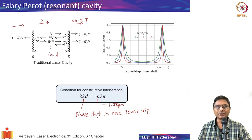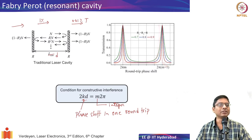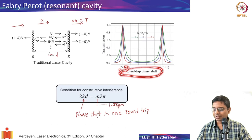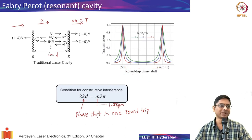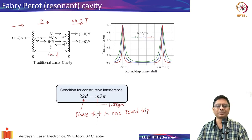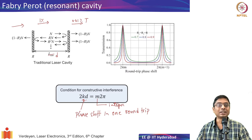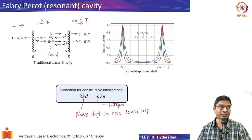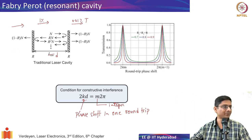When you have such a scenario, the transmission through this cavity system goes to one. Sharp transmission peaks occur at integer multiples of 2π round-trip phase shift. The distance between the mirrors is an integral multiple of wavelengths. Even though you'd expect only 0.01% transmission from two separate mirrors, at the resonant wavelength the transmission coefficient is nearly one — which is very counter-intuitive.